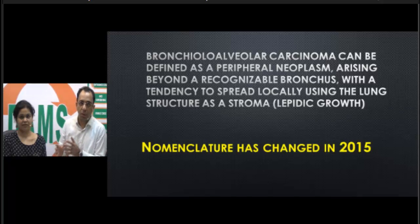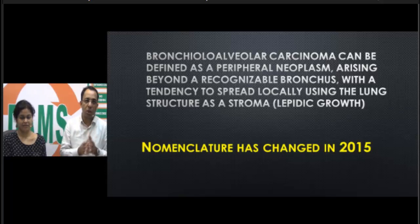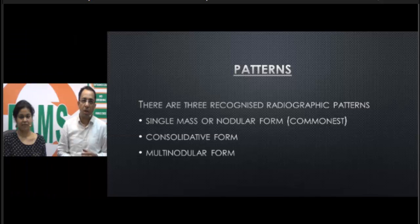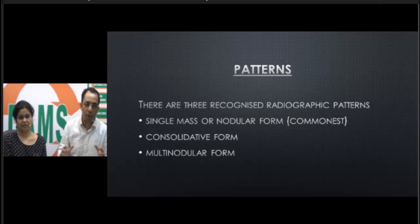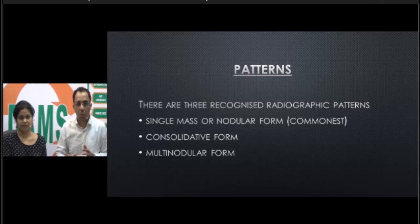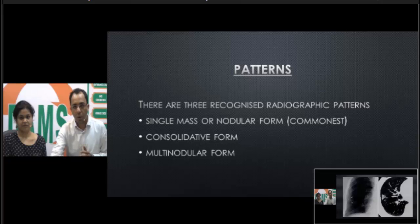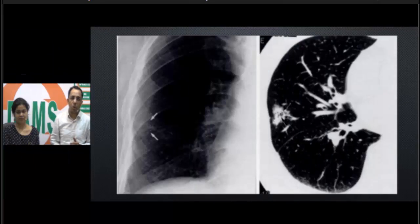Today Diksha will be talking about the pathological aspects and I will be talking about the radiological aspects. Multiple patterns are possible on a radiological image: you can have a single mass or nodular form, it may look like a consolidation, or you may have a multilobular form of bronchoalveolar cancer. Let us look at the image and how it looks.